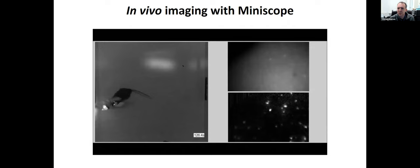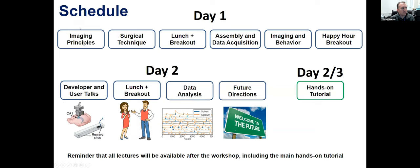Through this workshop, we've gone through the imaging principles, how to build a mini scope, where the light path goes. We talked about how to implant a GRIN lens, how to do the aspiration and the tunneling, how to implant a base plate on top to get the right field of view. Daniel went through how to build and how to acquire the data. Will, Joe, and Zach went through the imaging and behavior — how to actually put a mini scope on a mouse's head and how to run an experiment.